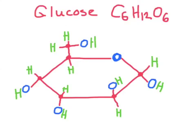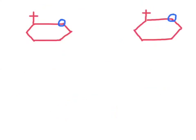It would be a good idea to memorize the formula for glucose — C6H12O6 — and to be able to draw this monomer in its ring form. When I teach how to form a carbohydrate from two glucose molecules, I use an abbreviated version and just show a couple of functional groups, one here and one here. So we have our sugar rings and our functional groups.